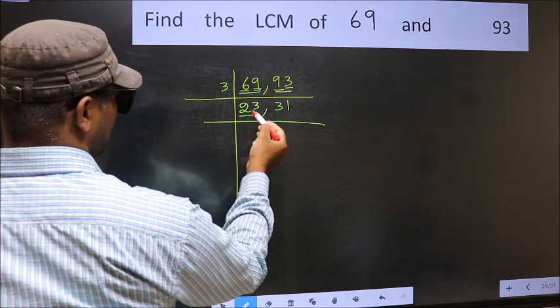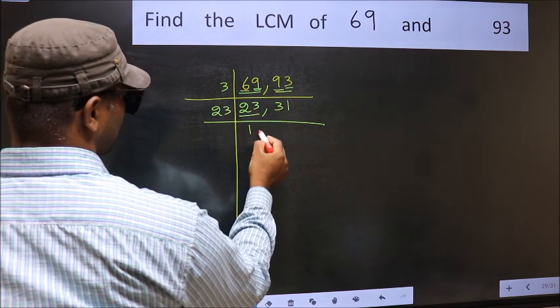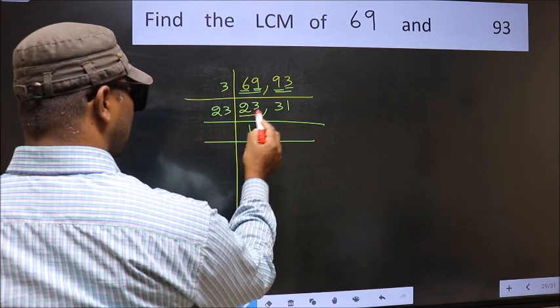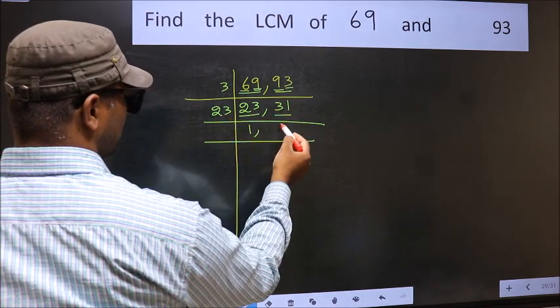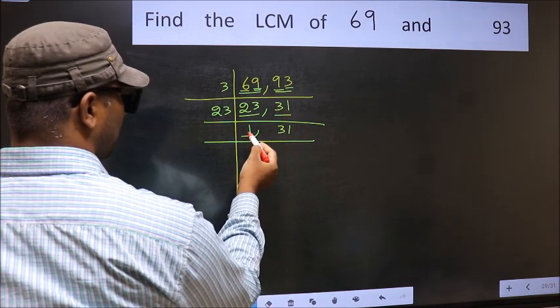Now here we have 23. 23 is a prime number, so 23, 1 is 23. The other number 31 is not divisible by 23, so you write it down as it is. Now we got 1 here.